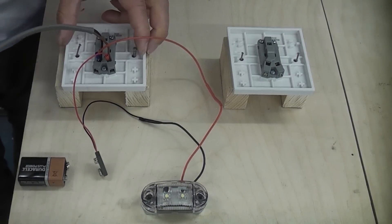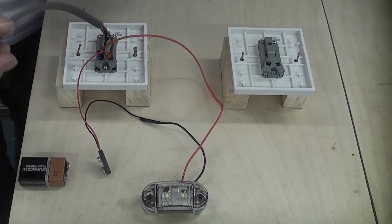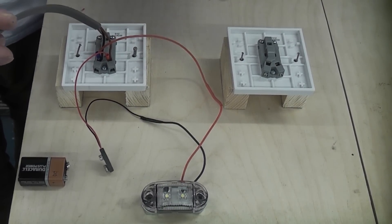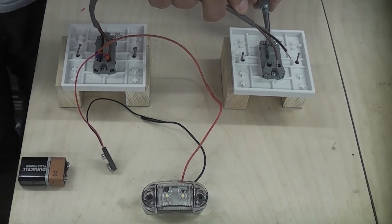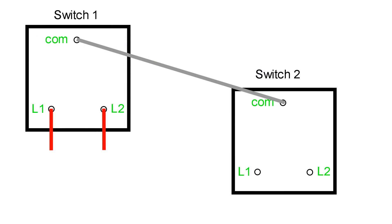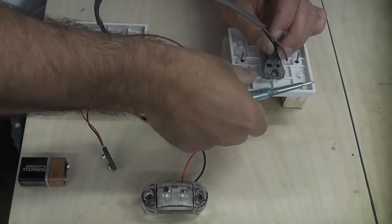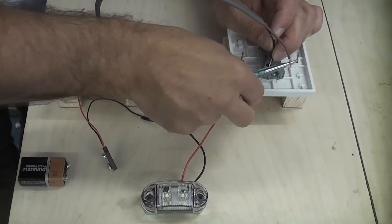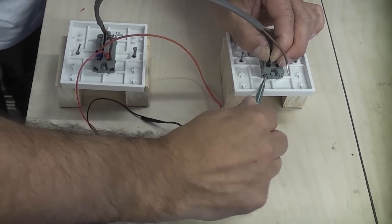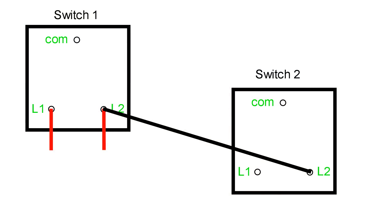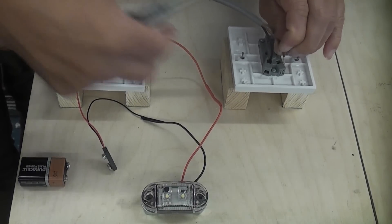I'm then going to take the brown wire and I'm going to put that into the other terminal. Once we've done that it is very simple. All you need to do is replicate what you've done at switch one onto switch two. So again I'm going to put the gray into comm, the black into L2, and the brown into L1.